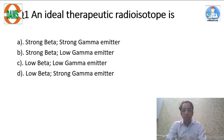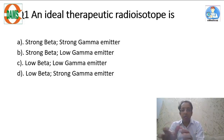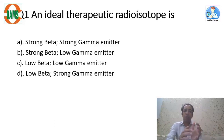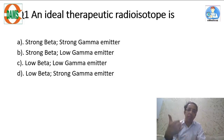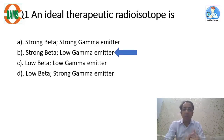An ideal therapeutic isotope should have strong beta emission, but it should also have low or weak gamma emission on the side. That gamma emission helps to image the isotope, while beta kills the tumor. Gamma rays are detected by the gamma camera, allowing you to see where the isotope is localized. The answer to this question is B.